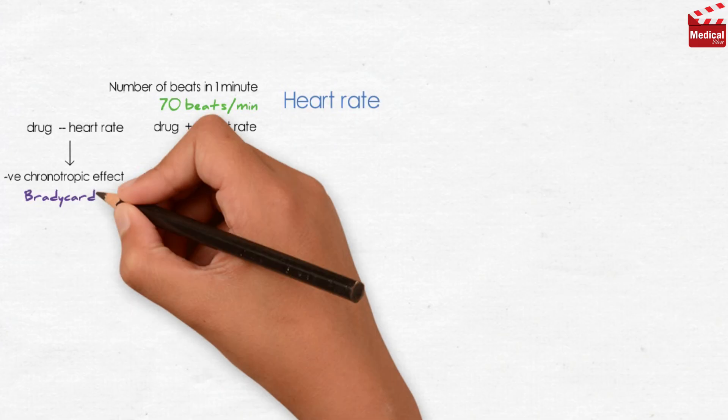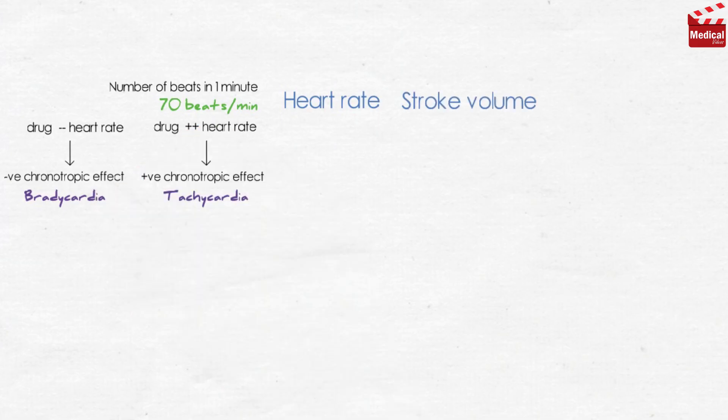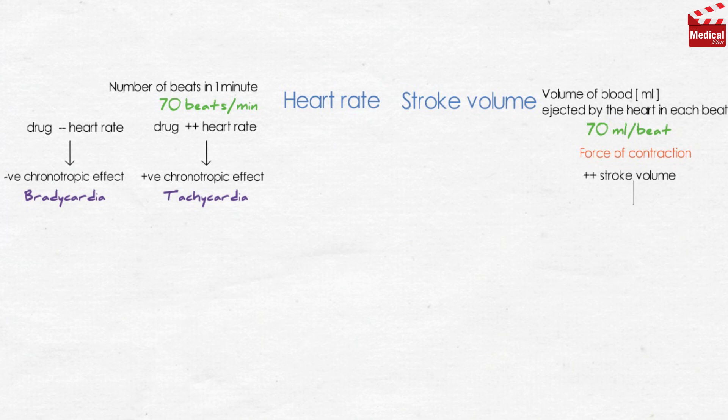The second is the stroke volume. It is the volume of blood in milliliters, ejected by the heart in each beat, in normal adult about 70 milliliters per beat. It indicates the force of contraction of the heart. Increased stroke volume means increased force of contraction, which is known as positive inotropic effect.